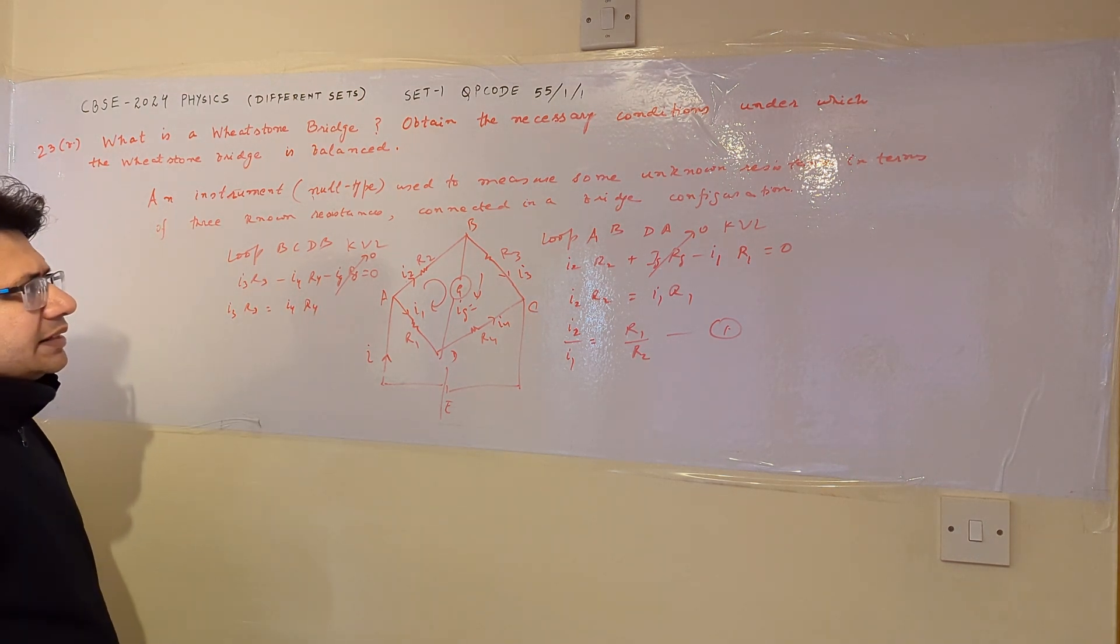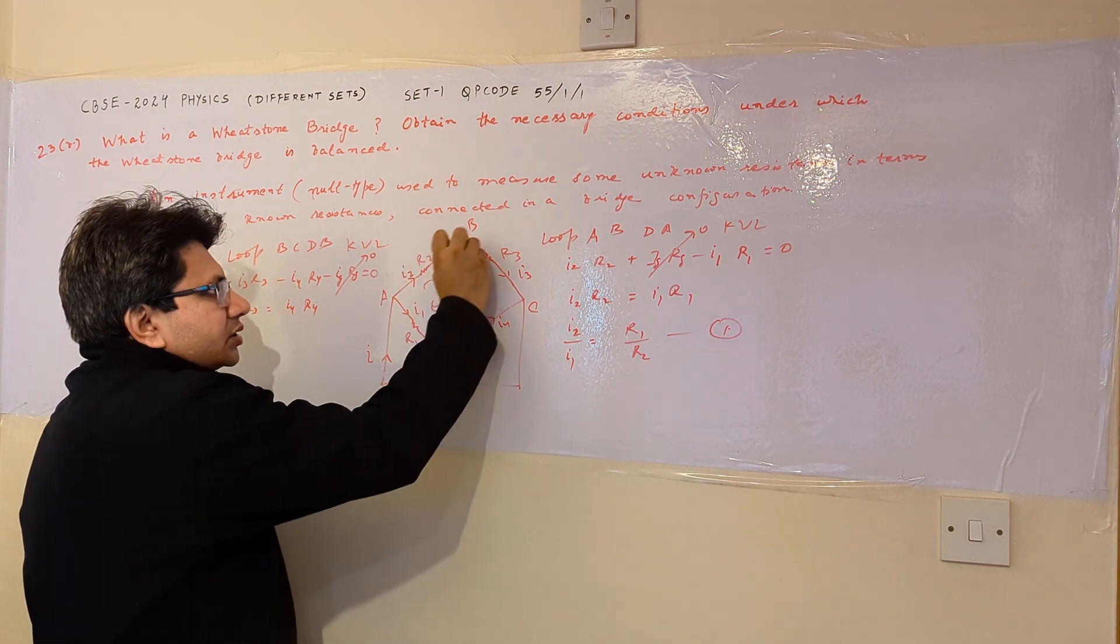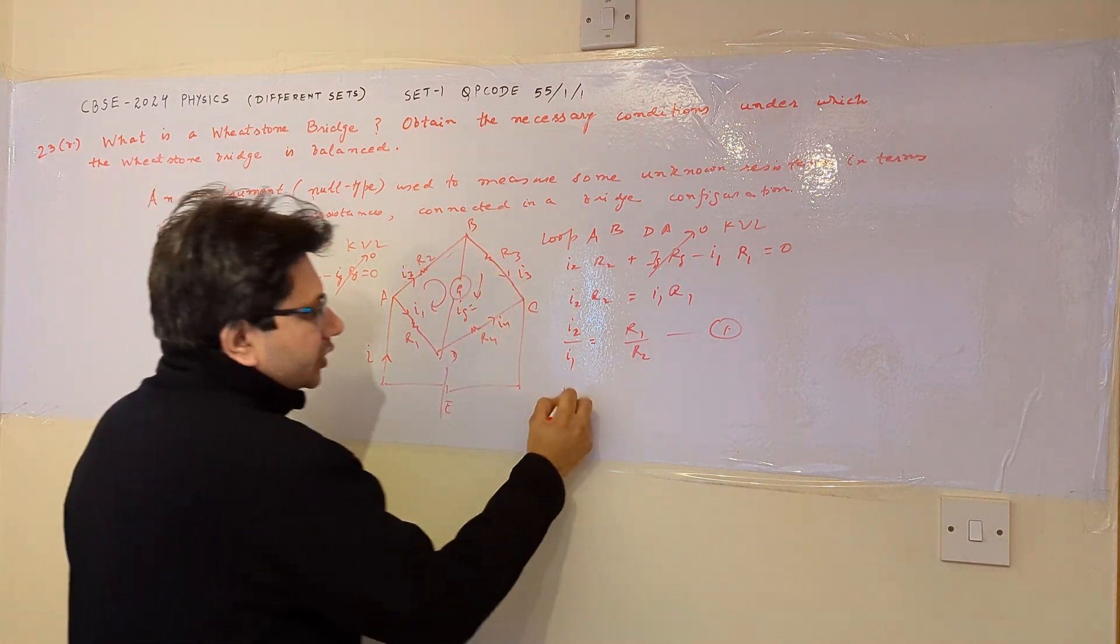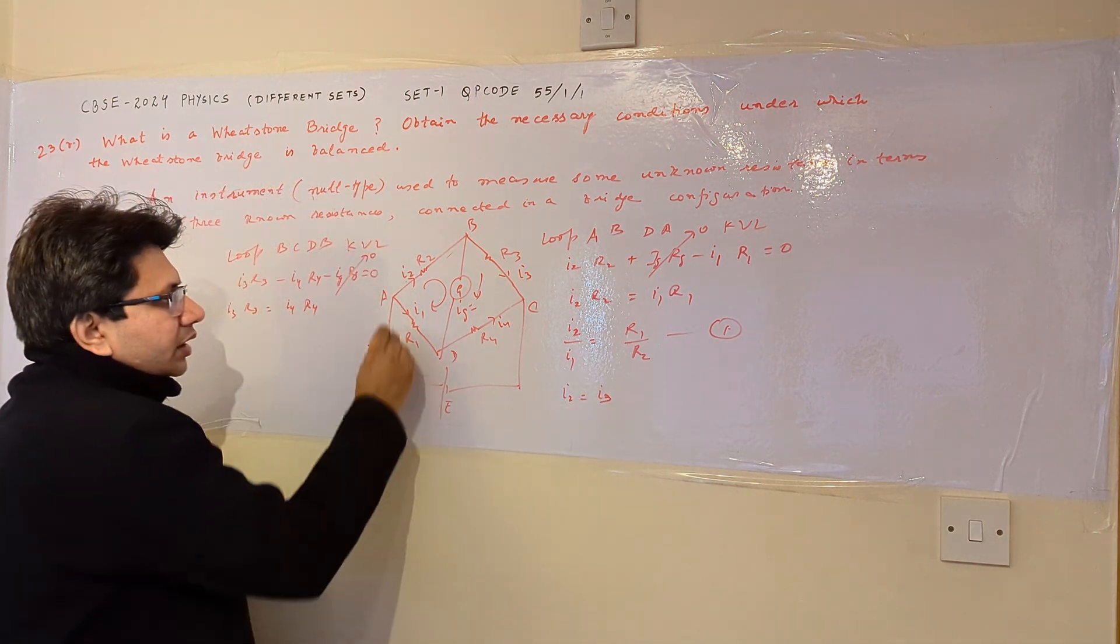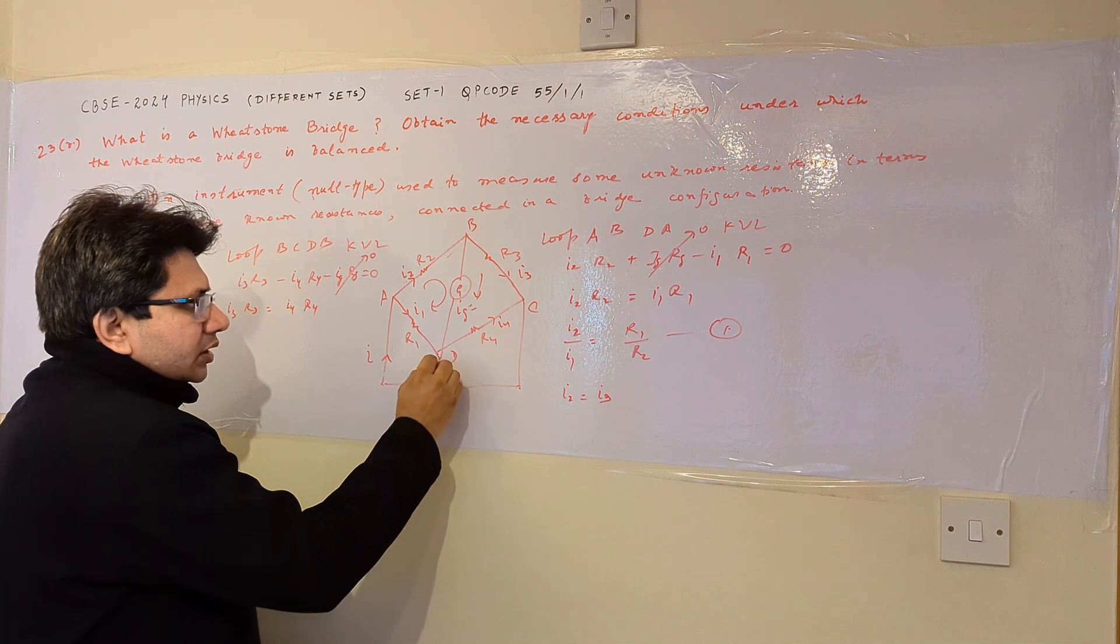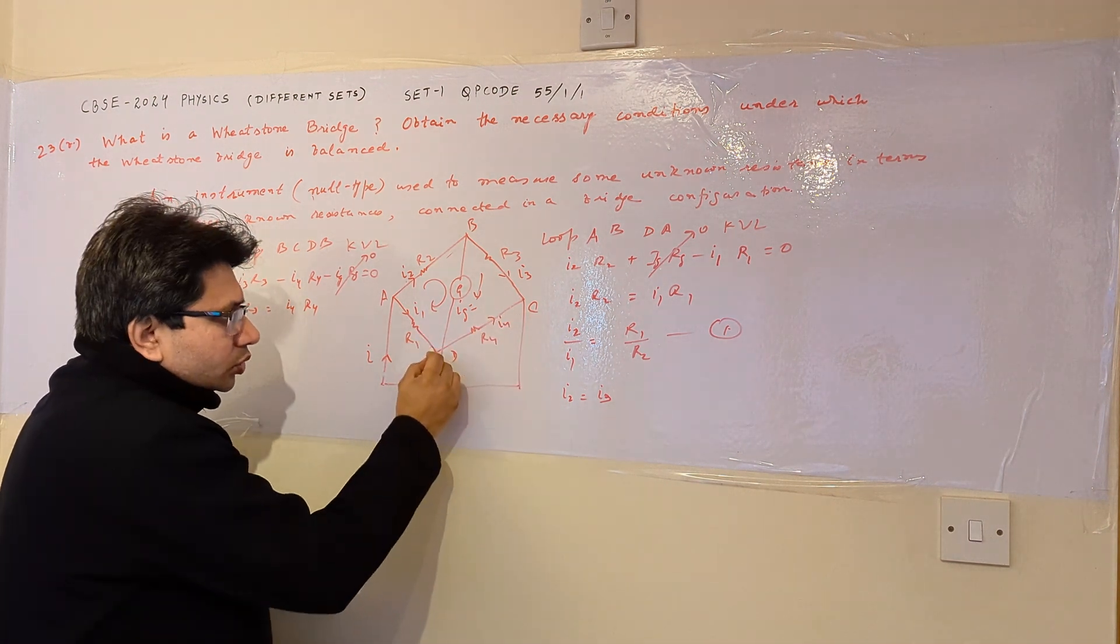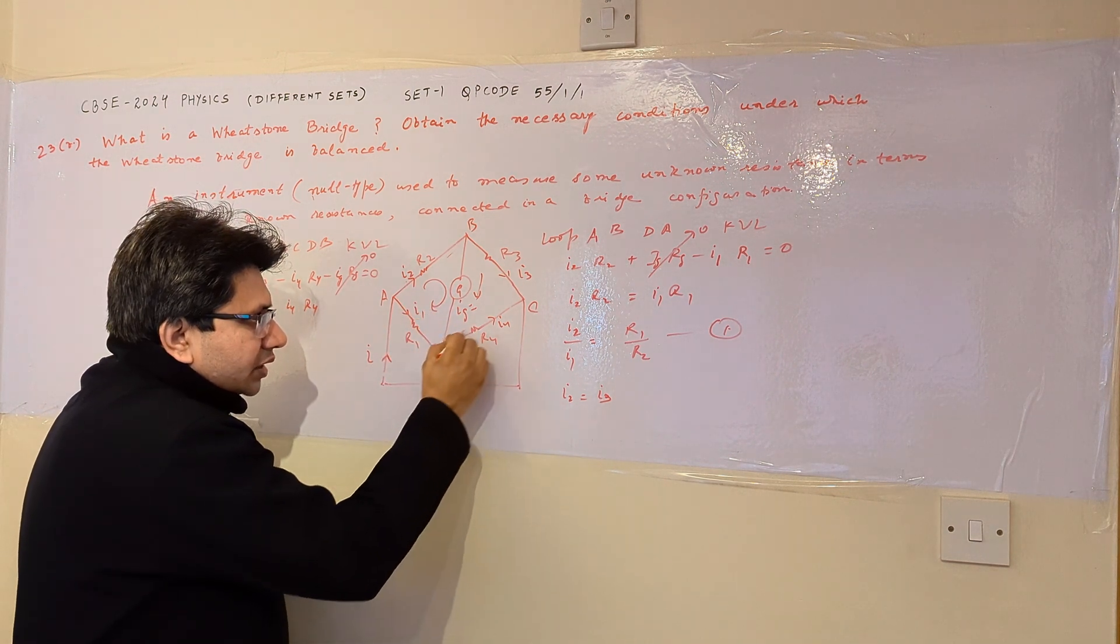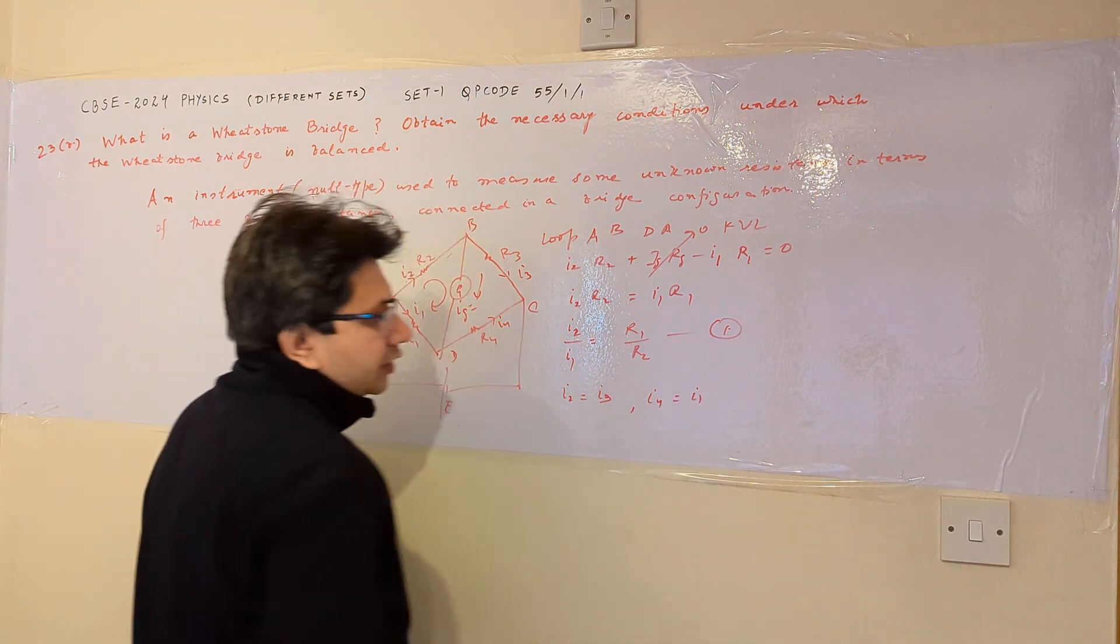Now you can easily see that if there is no current in the galvanometer, then I2 current passes through R3. Or in other words, we can say that I2 equals I3. Similarly, I1 current passing through the R1 resistance is same as the current passing through R4. Because no current is passing in this galvanometer, so the overall current I1 passes through R1. So we can say that I4 is equal to I1.